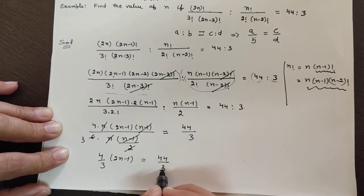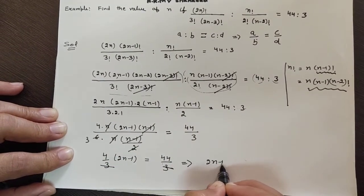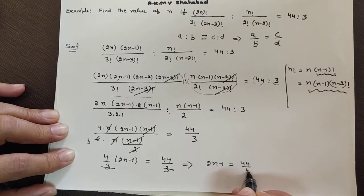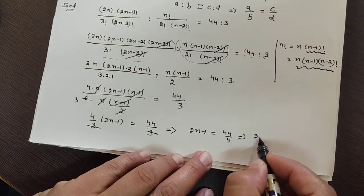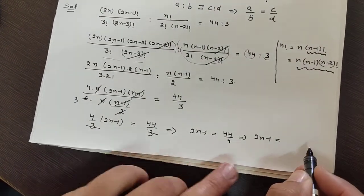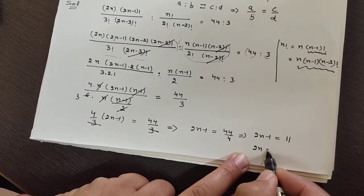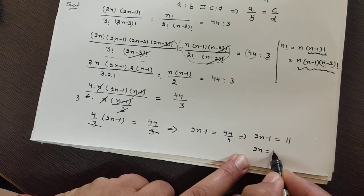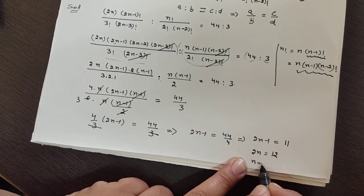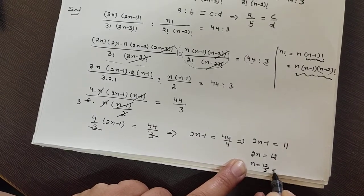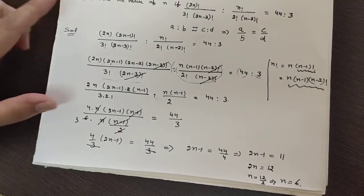So 2n-1 = 44/4 = 11. Taking -1 to the right hand side: 2n = 11+1 = 12, so n = 12/2 = 6. This is the single positive value, so n = 6 is the answer. Thank you so much.